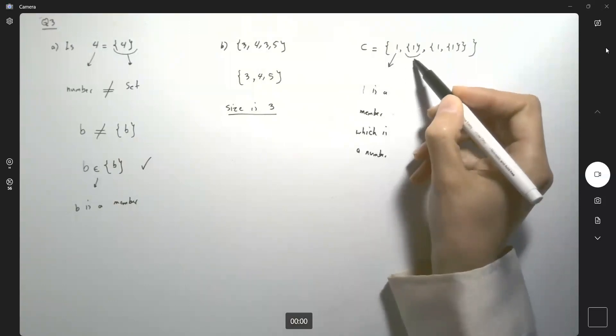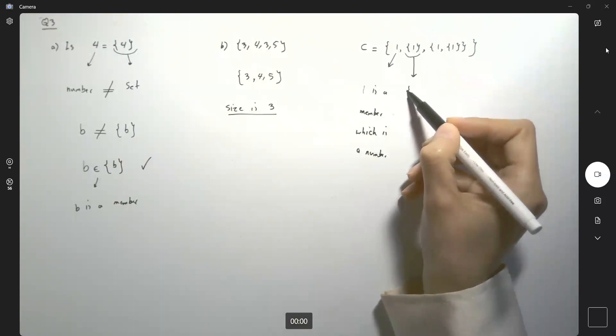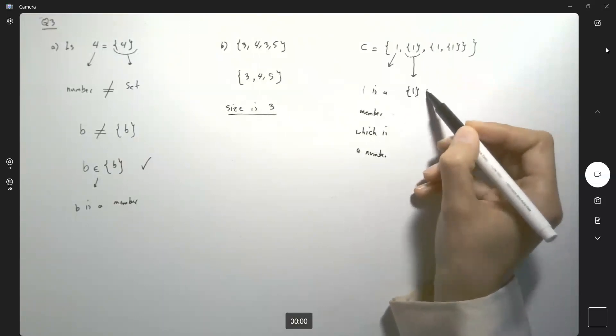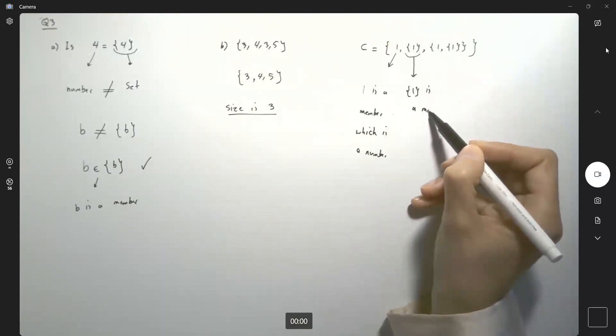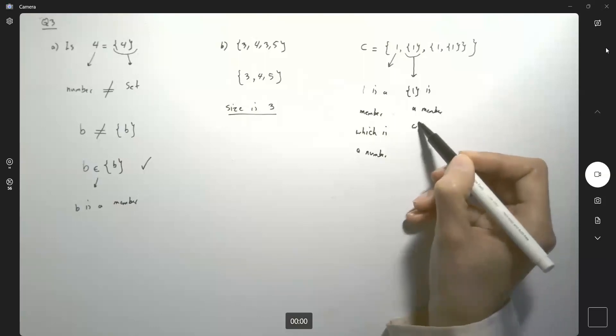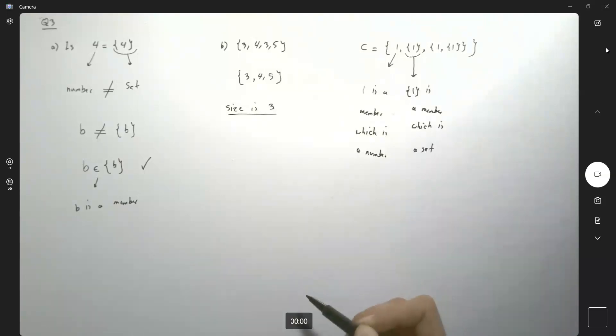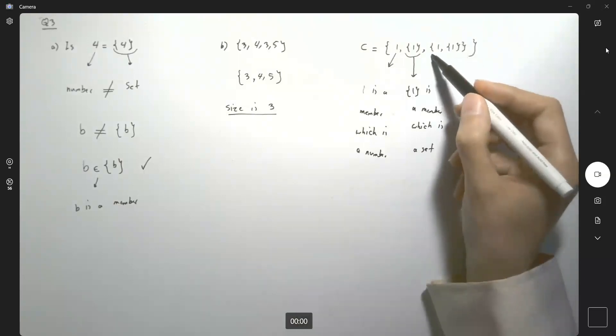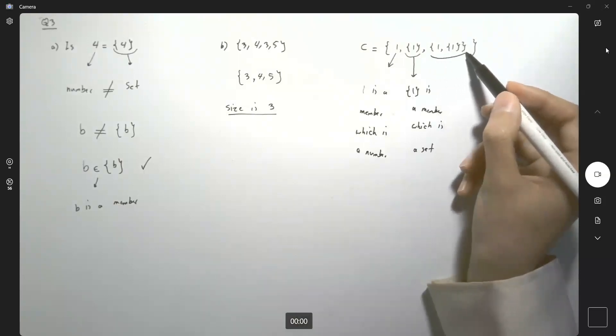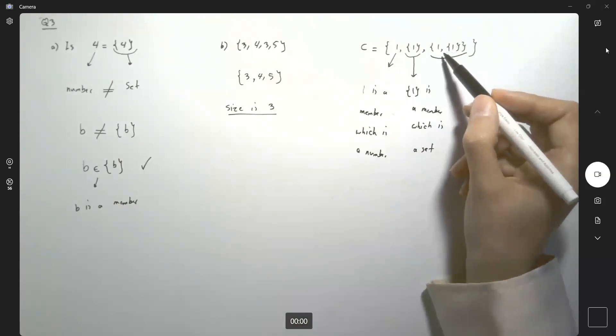The second element is a set. Set, including one, is a member, which is a set. Next member is another set. Next member is another set with two members.